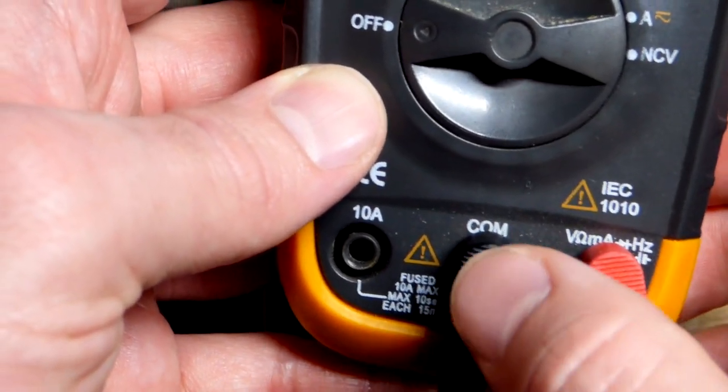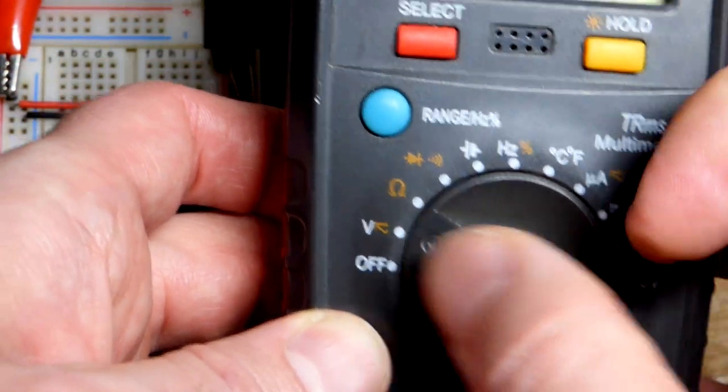You can see we got V there, that's where the red probe has to go, and the black probe goes to COM. We're going to set the dial there.